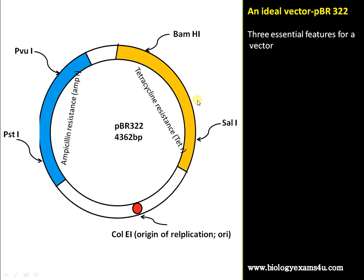First of all, let's look at what is a gene cloning vector. A gene cloning vector is a DNA molecule to which our gene of interest is integrated for cloning, and which has the capacity to replicate inside the host cell. This is an example of a gene cloning vector called pBR322 — it's a plasmid vector.